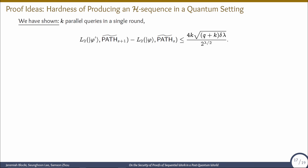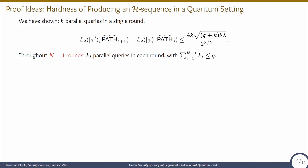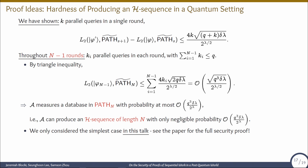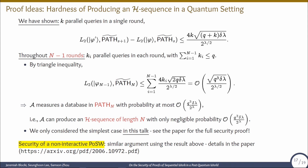What we have shown is that after making K parallel queries in a single round, the difference between L2 projections is very small. Throughout M-1 rounds, we can make K_i parallel queries in each round with total queries at most Q. We apply the triangle inequality to show that the adversary can measure a database in Path_N after M-1 rounds only with negligible probability, of order Q^3 over 2^lambda. That is, the adversary can produce an H sequence of length N only with negligible probability if running in sequential time less than N. The security of the non-interactive proof of sequential work follows by a similar argument.